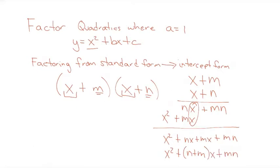The shortcut I gave you last week for multiplying two binomials together — where the number in front of the x's on both is one — I told you to write the letter squared, add the two numbers together multiplied by the letter, plus the two numbers multiplied together. That's where that shortcut comes from.